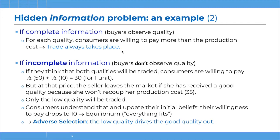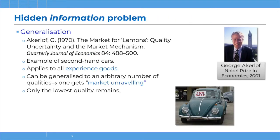This is inefficient because, as we saw, if there was complete information, a good of high quality would also be sold on the market. This simplified model is a simple version of a more general model proposed by George Akerlof, who won the Nobel Prize in economics in 2001 for his work on information economics, which started with the article 'The Market for Lemons: Quality Uncertainty and the Market Mechanism.' Lemons is the name for second-hand cars of bad quality. You can generalize what we've seen to an arbitrary number of qualities and get the same equilibrium result — the market unravels and only the lowest quality remains on the market.